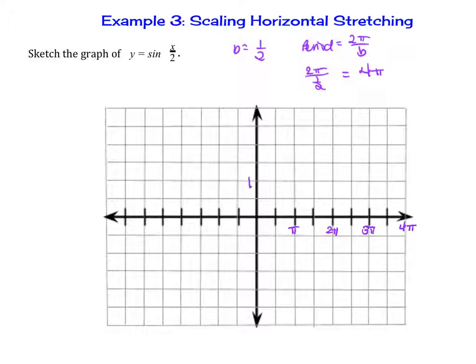Then the amplitude is 1 and negative 1. We're graphing sine. So now we start at 0. This is π, 2π, 3π, and 4π. And there's our graph.